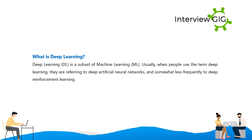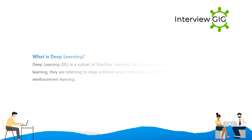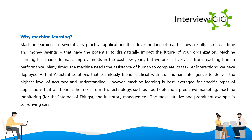What is deep learning? Deep learning is a subset of machine learning. Usually when people use the term deep learning, they are referring to deep artificial neural networks, and somewhat less frequently to deep reinforcement learning.